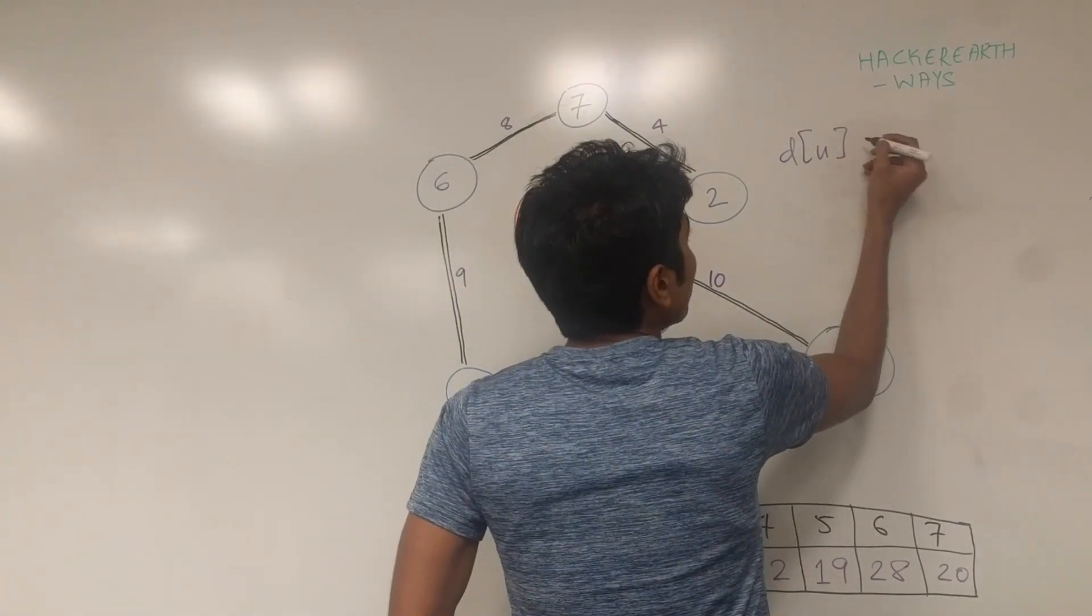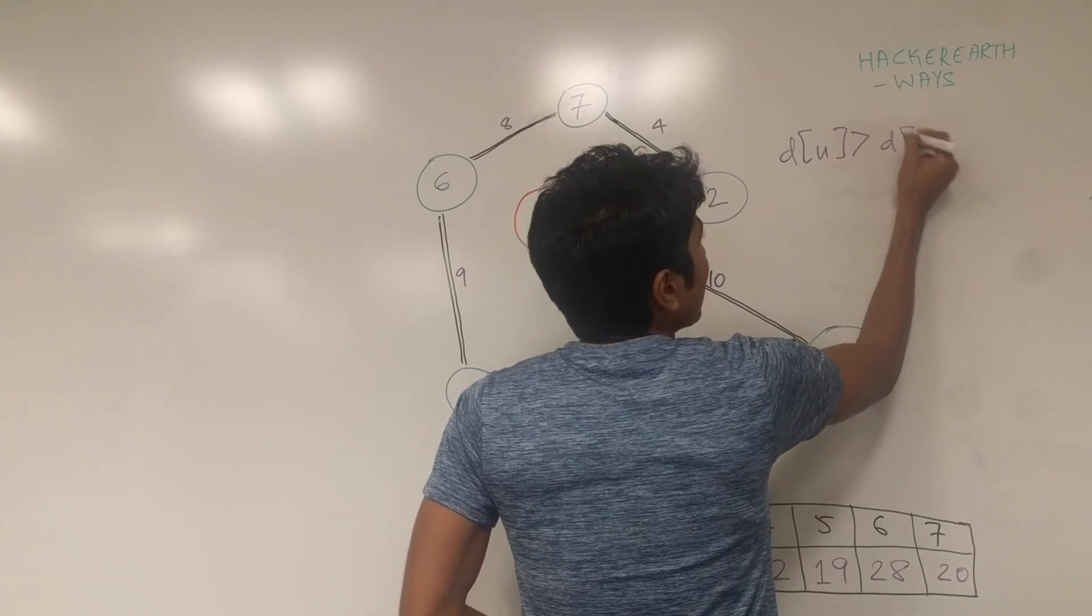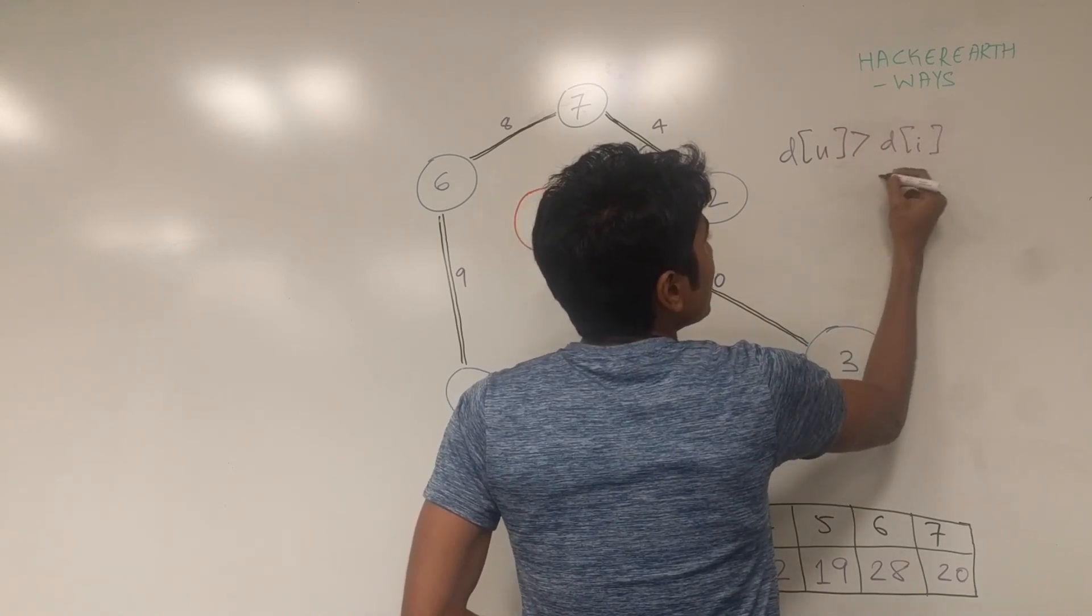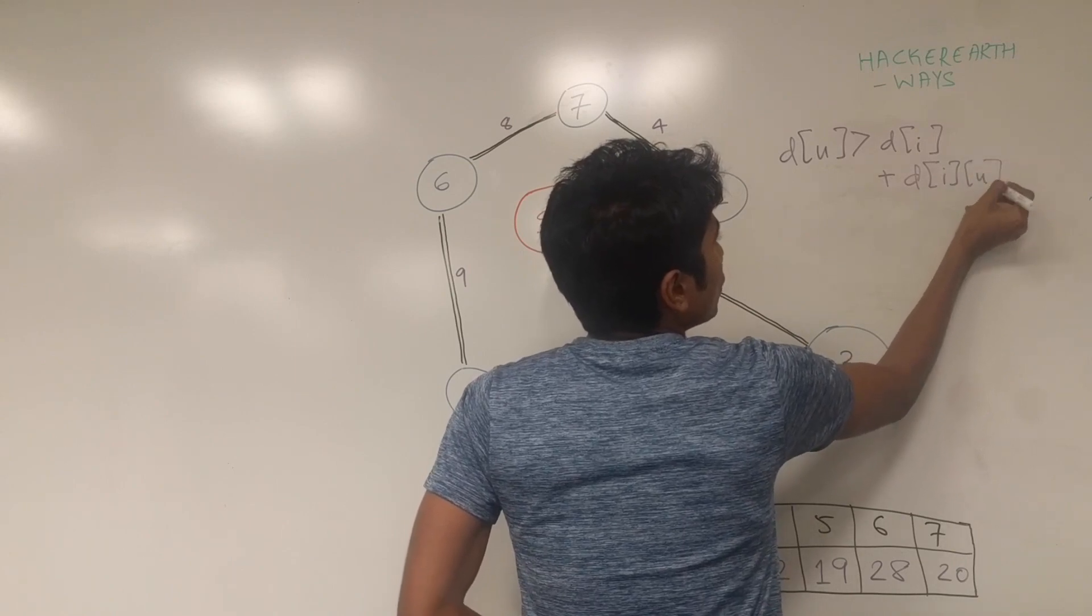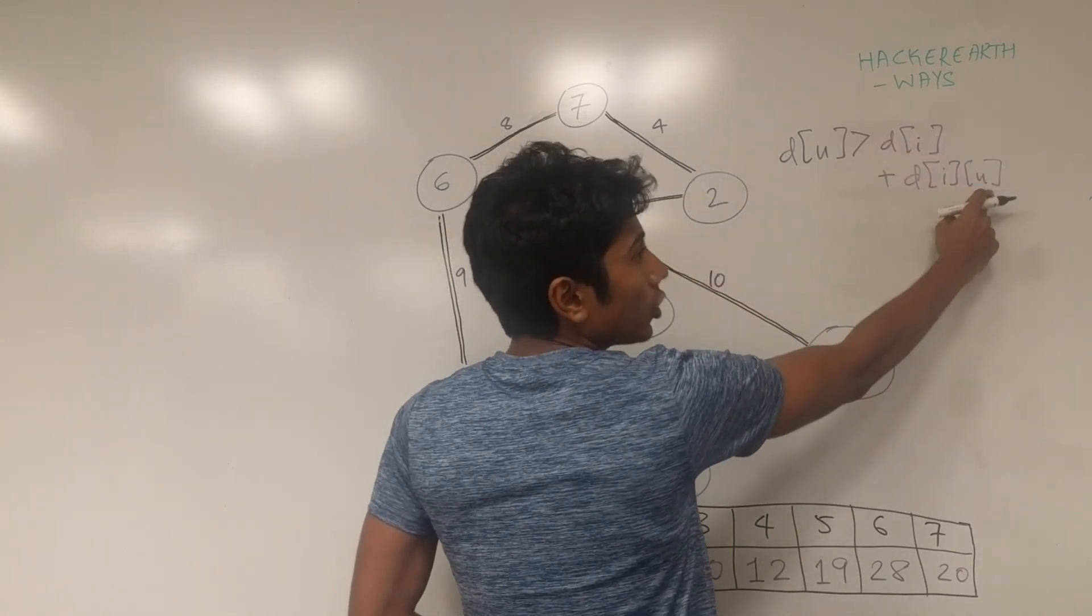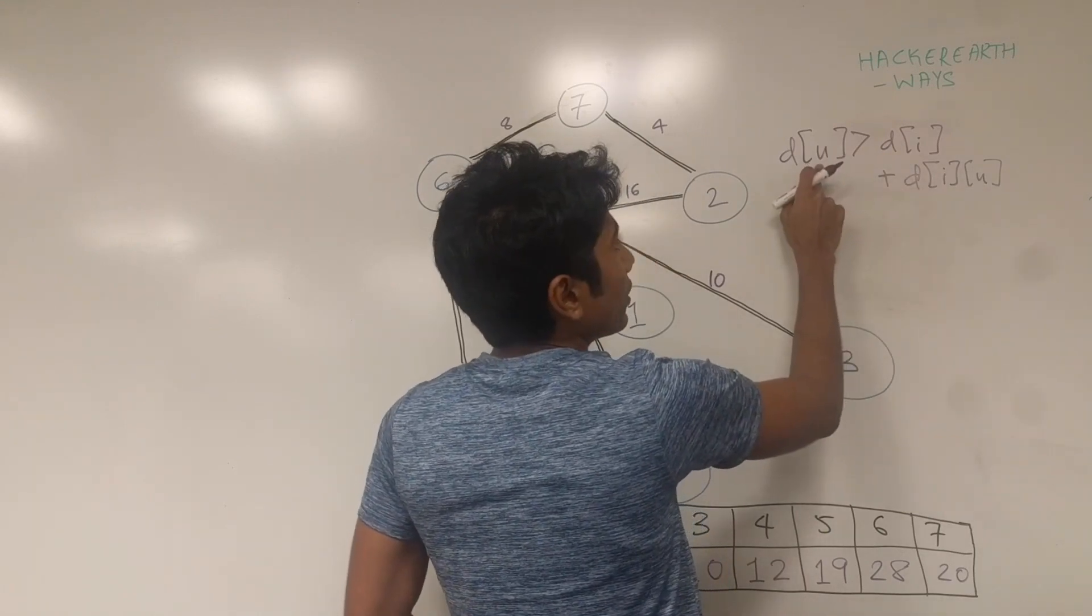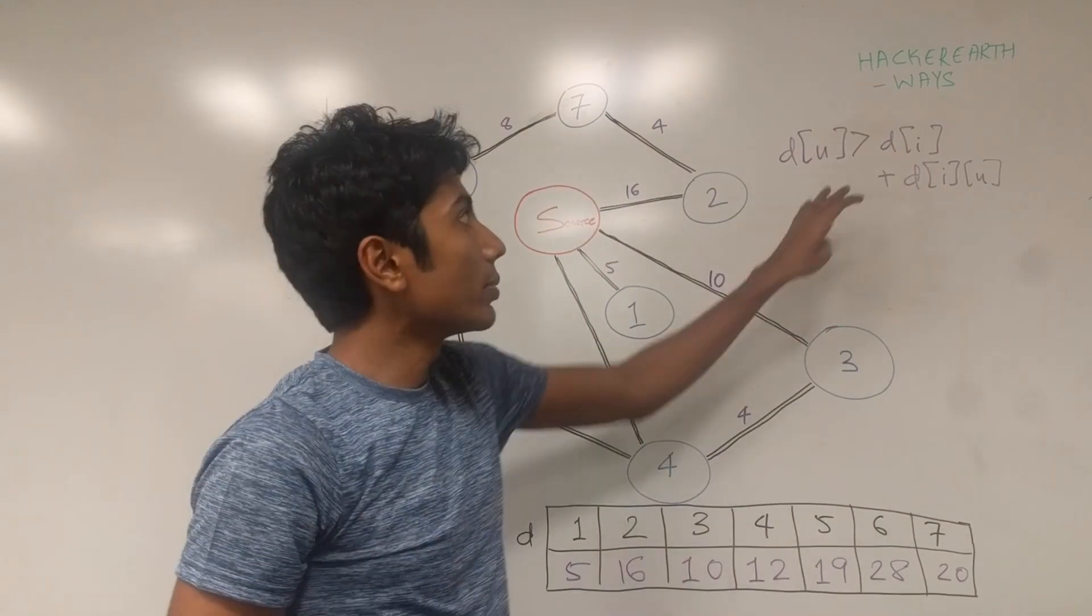The condition should be that D of U is greater than D of I plus D of I comma U. So going from I to U is actually lesser than going to U directly, that would be the condition.